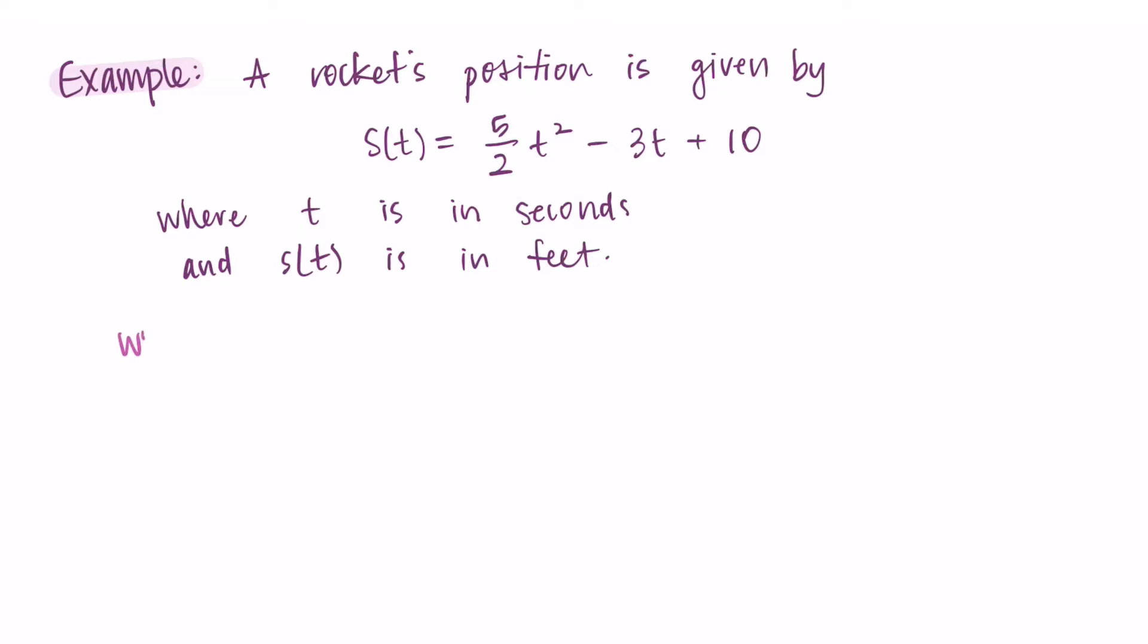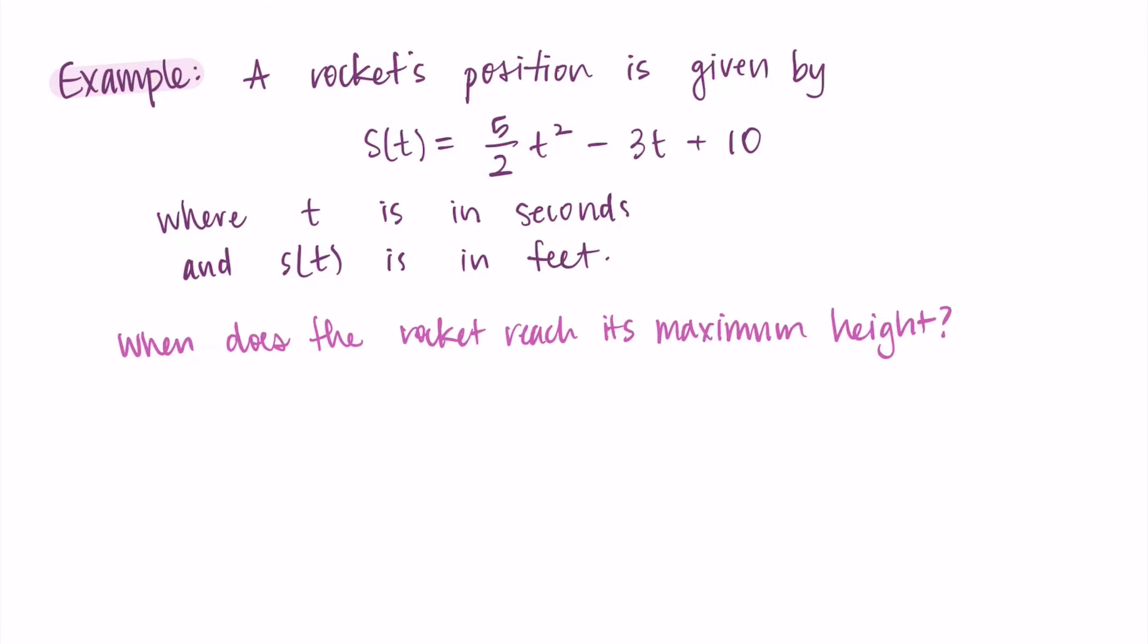I want to ask when does the rocket reach its maximum height. So let's talk about what's going on in this example in order to understand it. Let's say this rocket is being shot straight in the air, so it goes up and it stops at some point before it falls down to the earth. So at that top point, the velocity is going to be zero.